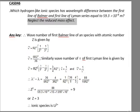Hello everyone, let's see our next example. Which hydrogen-like ionic species has wavelength difference between the first line of Balmer series and the first line of Lyman series equal to 59.3 × 10⁻⁹ m? The wavelength difference between first line of Lyman and first line of Balmer is given, and we have to find Z. Let's start.